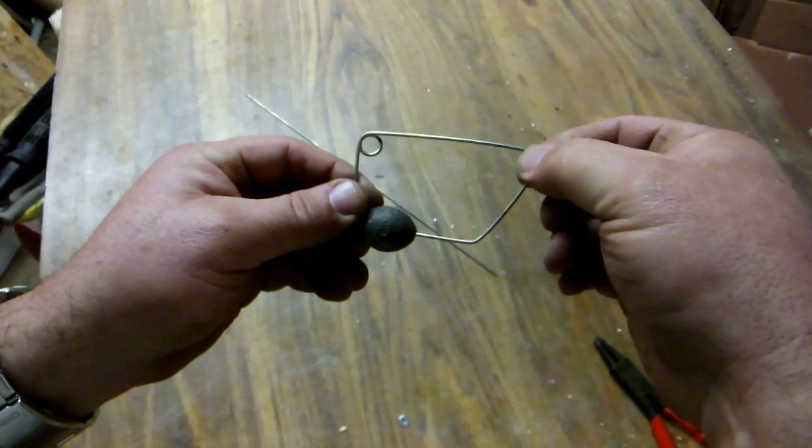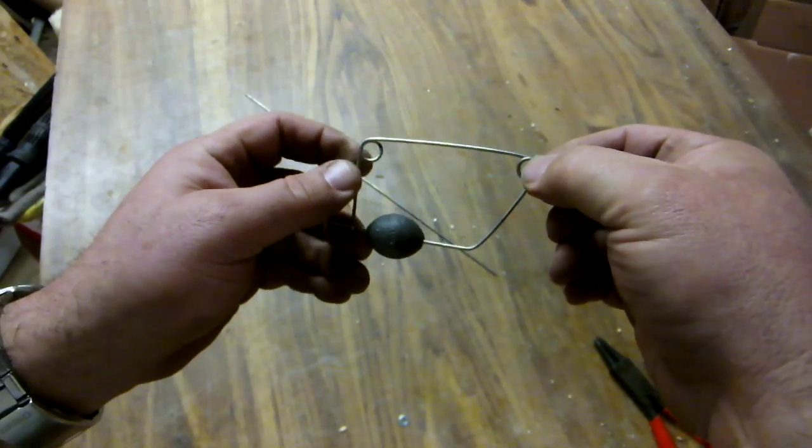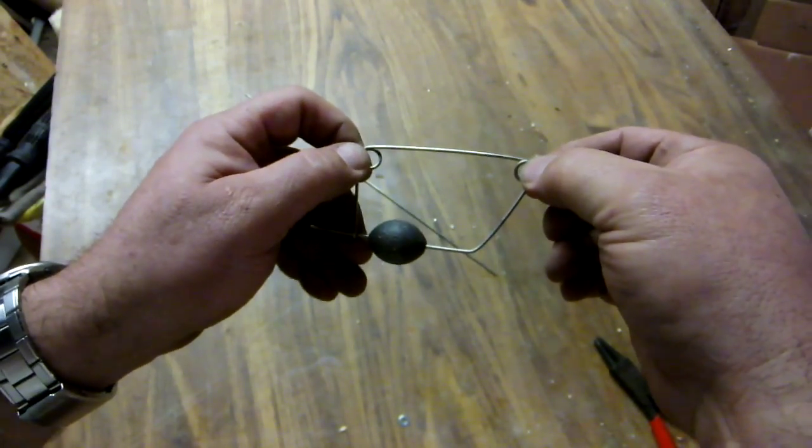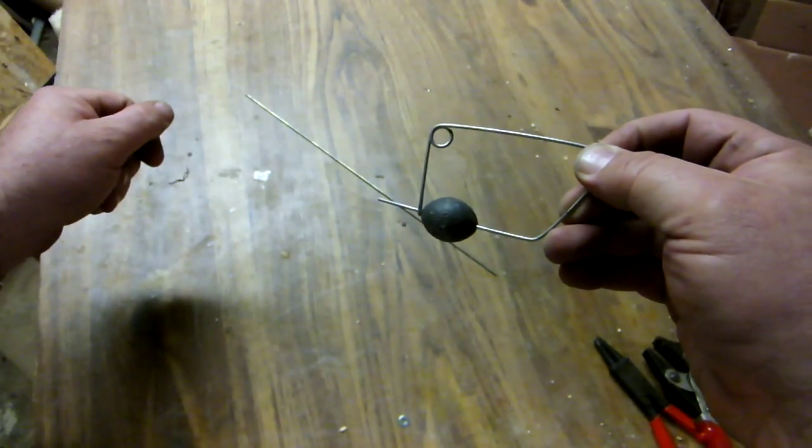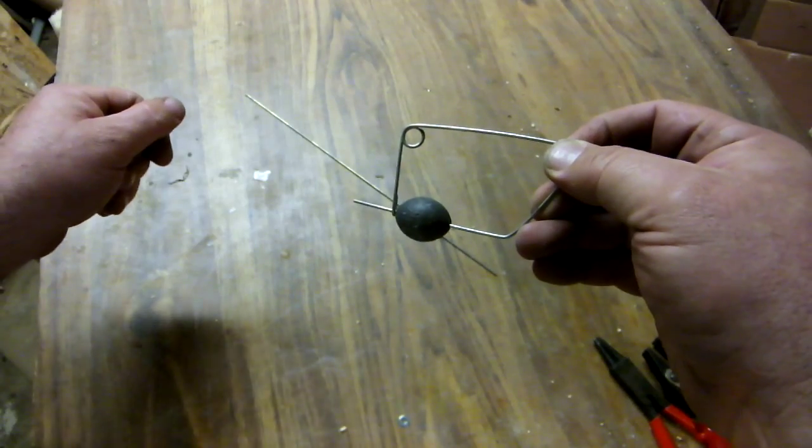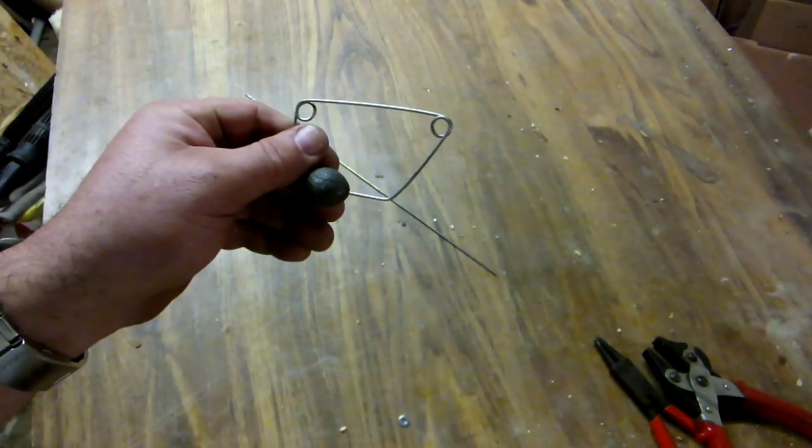All you need to do is attach your swivels or even put split rings on either end. This end goes to your trailing tube and worm, and this end to your main line.